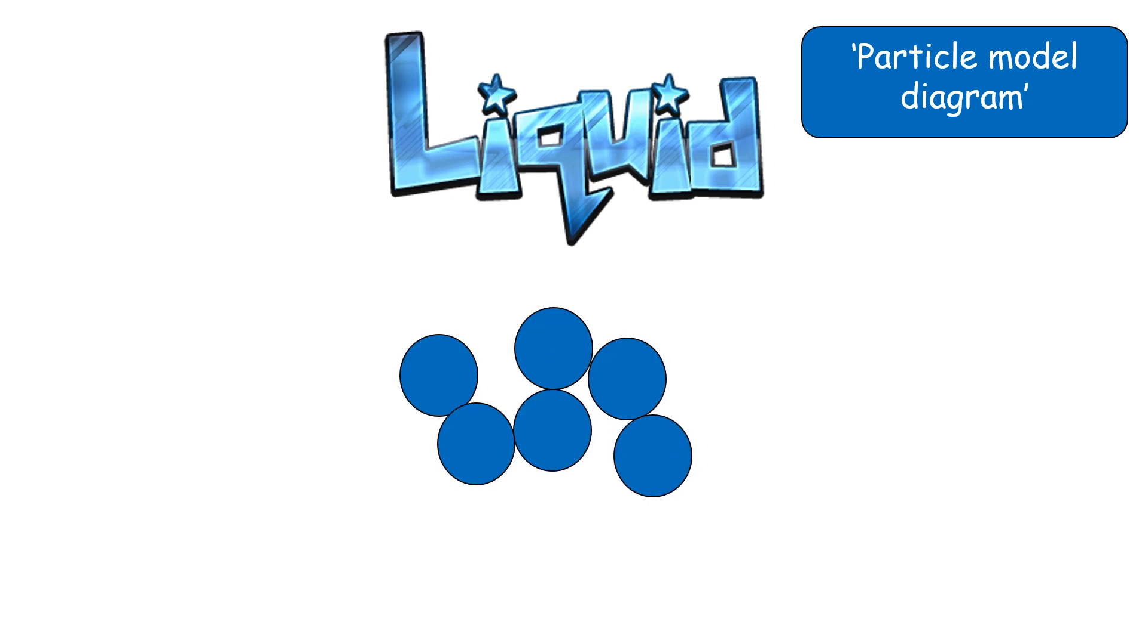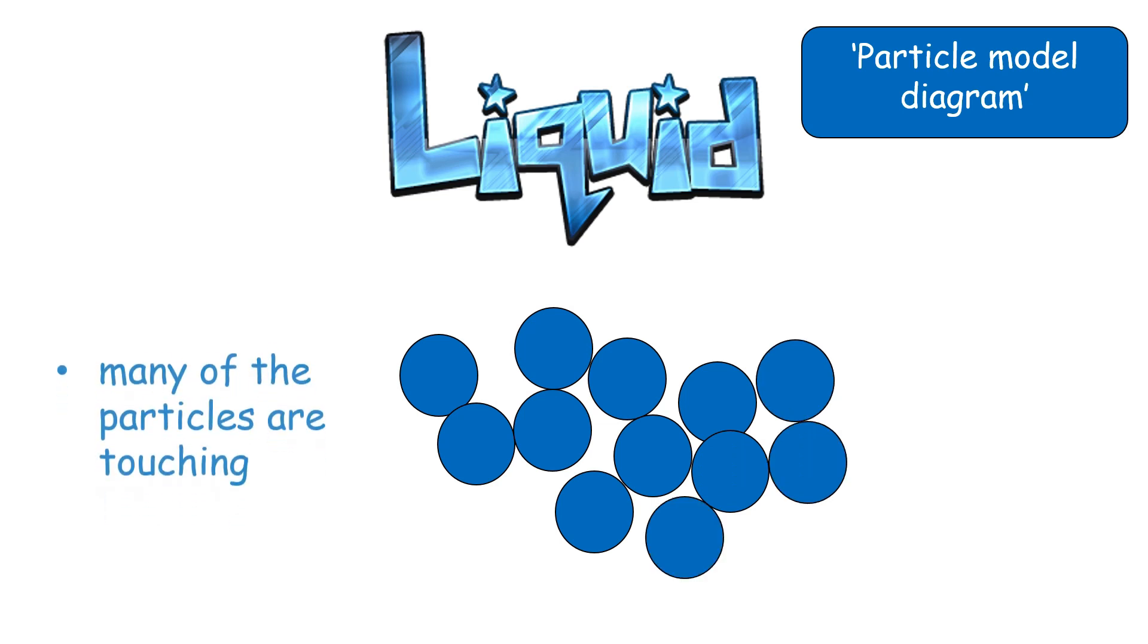Your liquid diagram should look something like this, very different from the solid. Here, many of the particles are still touching one another, but they are arranged far more randomly.